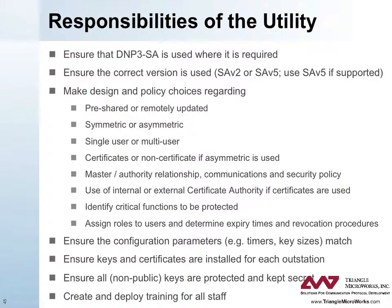Finally, let's look at some of the responsibilities of the utility. These include ensuring that DNP3 secure authentication is used where required and ensuring the correct version is used — that is, SA-V2 or SA-V5. They should use SA-V5 if it's supported. The utility is also responsible for making design and policy choices regarding whether to use pre-shared or remotely updated keys, whether to use symmetric or asymmetric, and if asymmetric, whether to use certificates or non-certificates, and whether to use single-user or multi-user mode. If a certificate is used, the utility is responsible for determining whether to use an internal or external certificate authority. In addition, the utility is responsible for establishing a master-authority relationship, communications and security policy, identifying critical functions to be protected, and assigning roles to users and determining expiry times and revocation procedures. The utility is also responsible for ensuring configuration parameters such as timers and key sizes match, ensuring keys and certificates are installed for each outstation, ensuring all non-public keys are protected and kept secret, and for creating and deploying training for all staff.